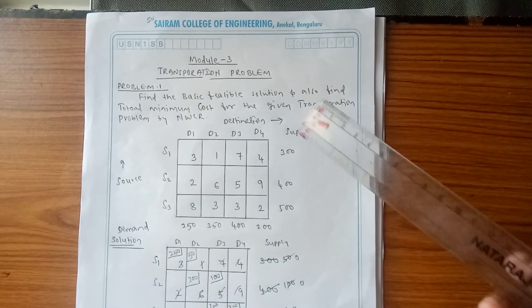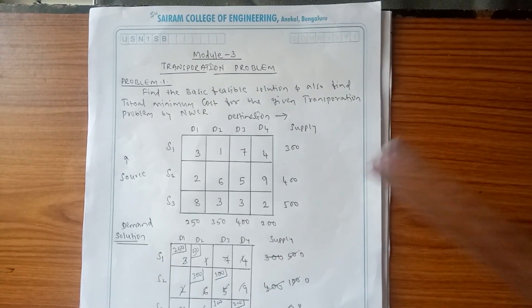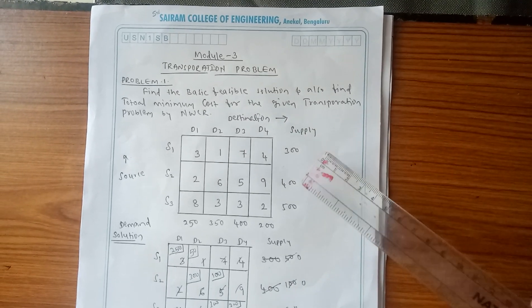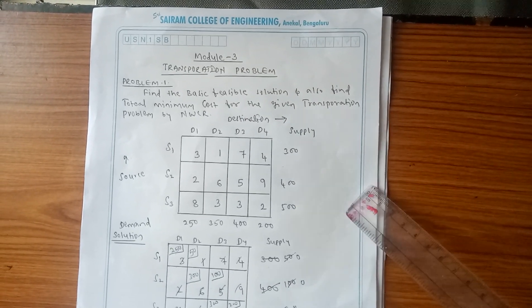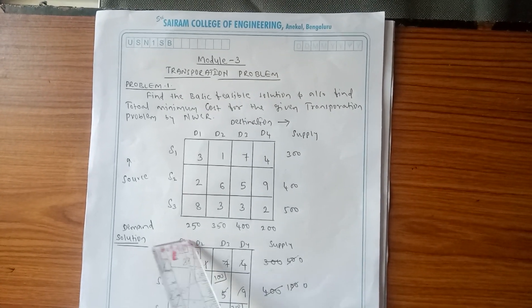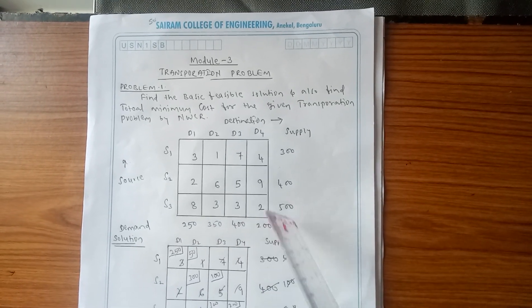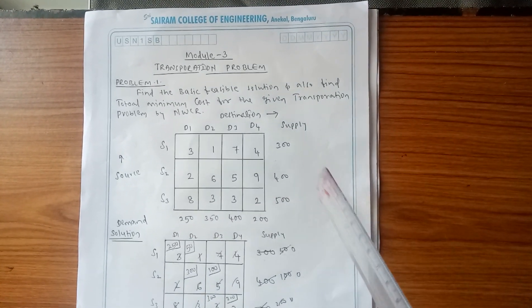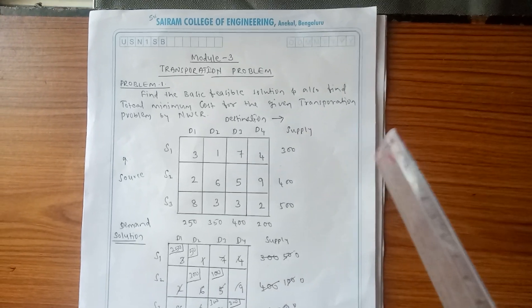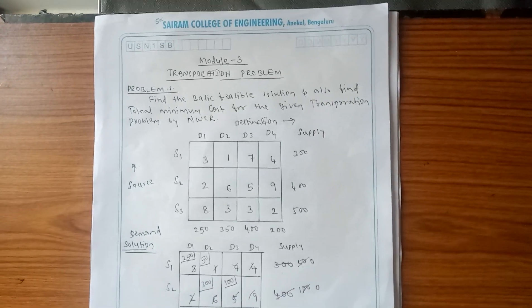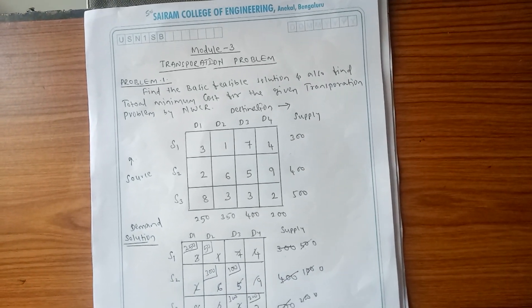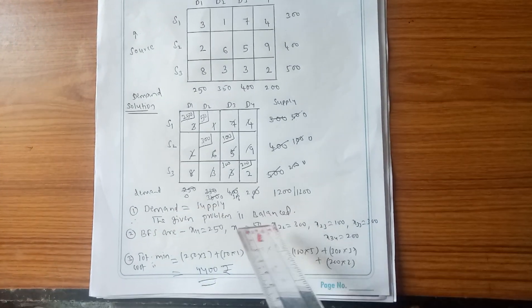Check: demand value equals supply value. Supply: 300 + 400 + 500 = 1200. Demand: 250 + 350 + 400 + 200 = 1200. Since demand equals supply, the given problem is balanced — go to the second step.